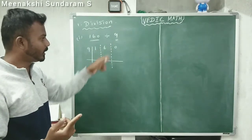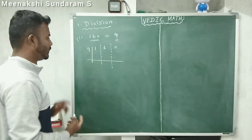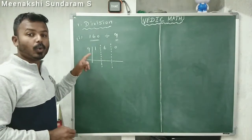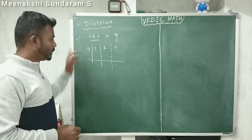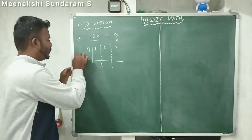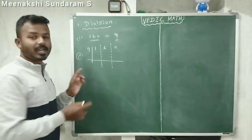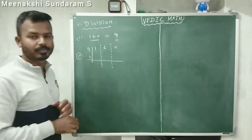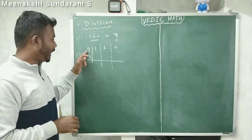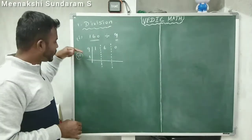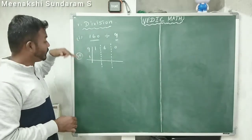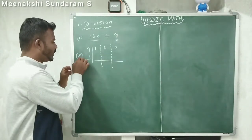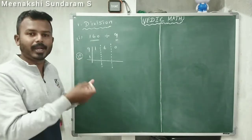Now, 9 is closer to 10. How much do I need to add to 9 to make it 10? That is 1. So, write a 1 here. 9 is closer to 10, so what number do I add to 9 to make it 10? That is 1 — write it here. That is called the base number.